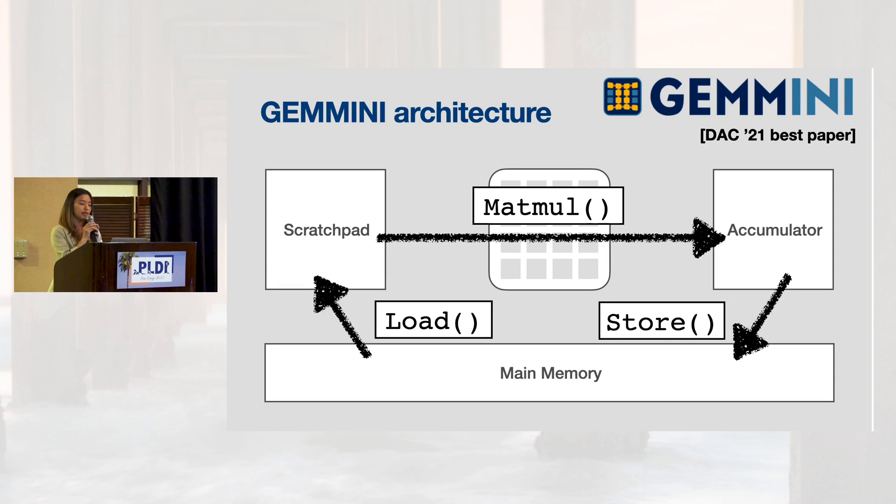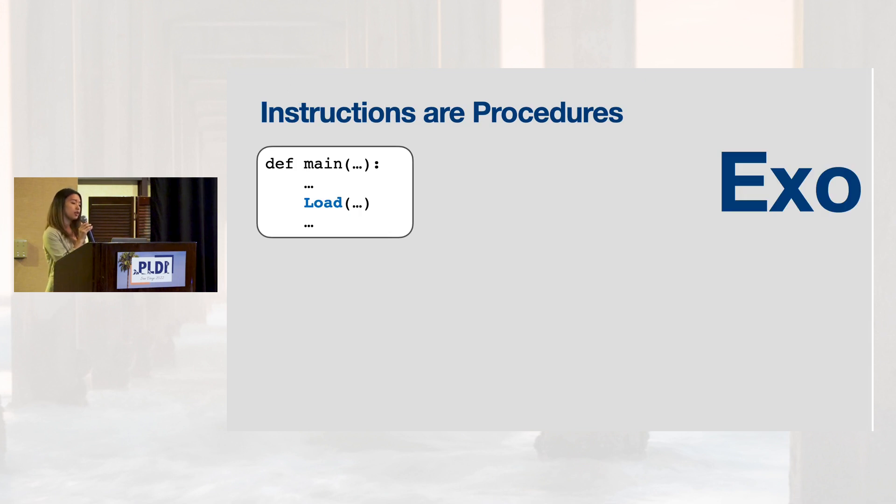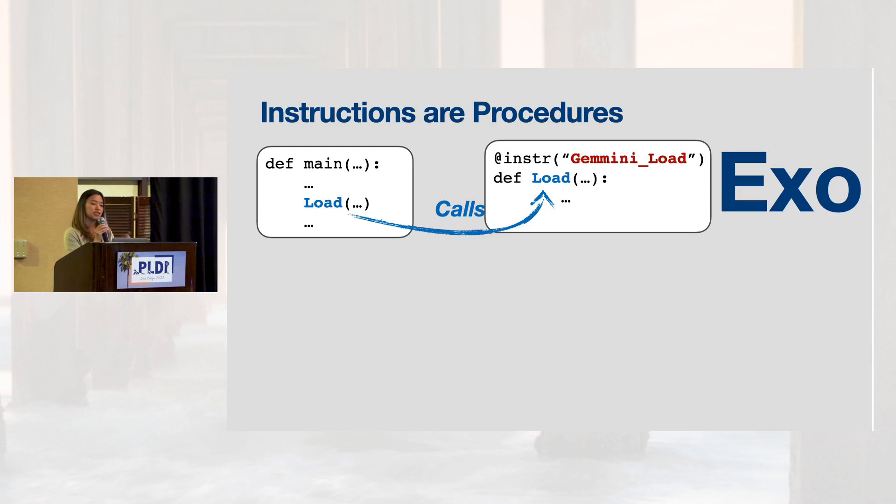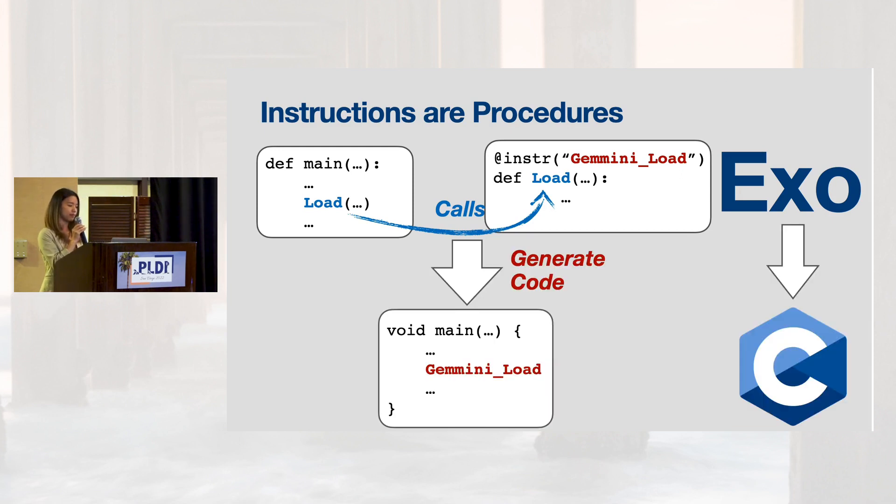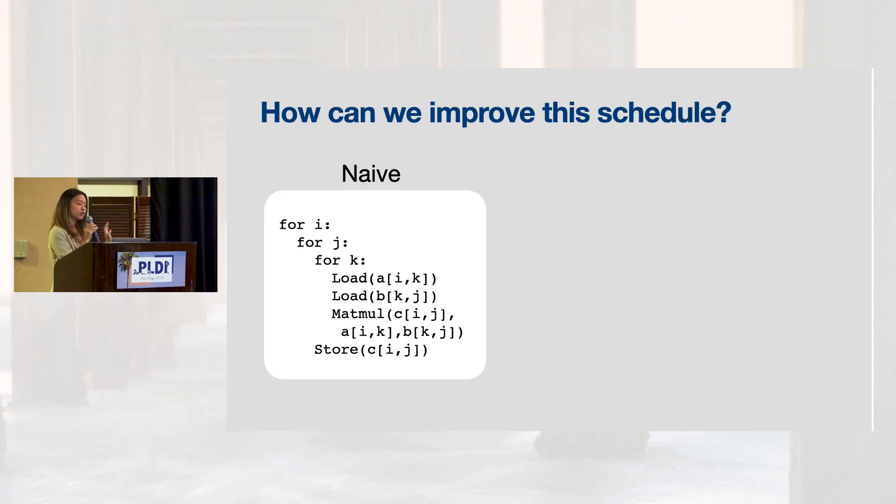Now, the question is, how we model these instructions using EXO? In EXO, hardware instructions aren't special. They're just sub-procedures that splice in custom C-strings during code generation. Now, let's try to think through how we can improve this naive Matmul schedule to a more performant one. I'd like to invite everyone to think along with me.